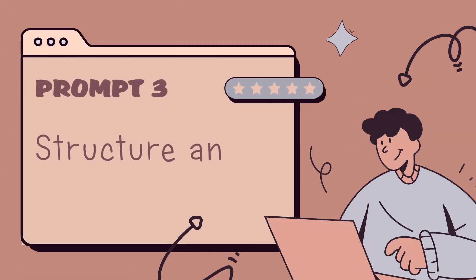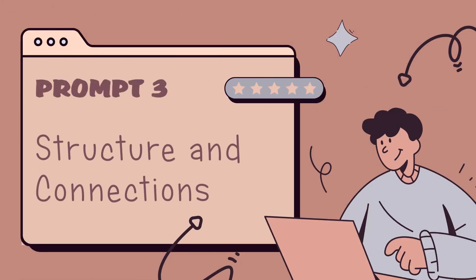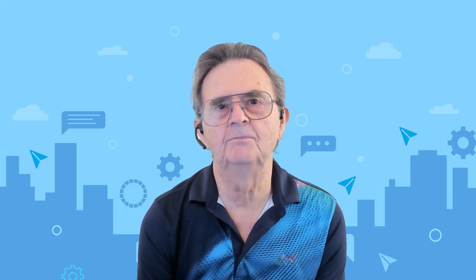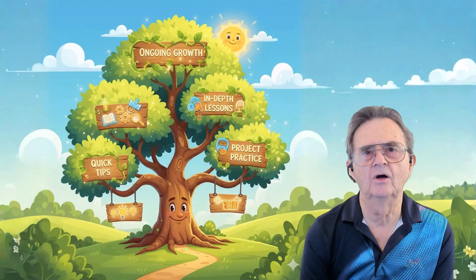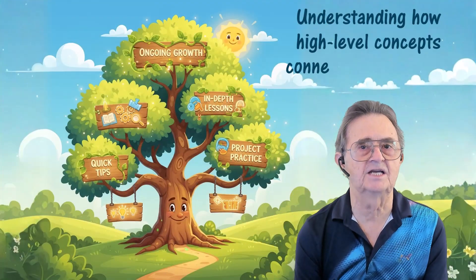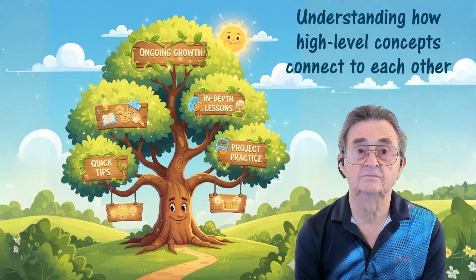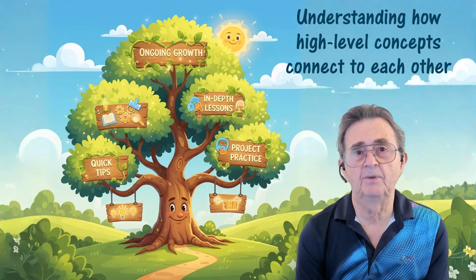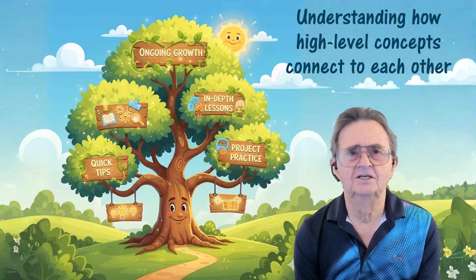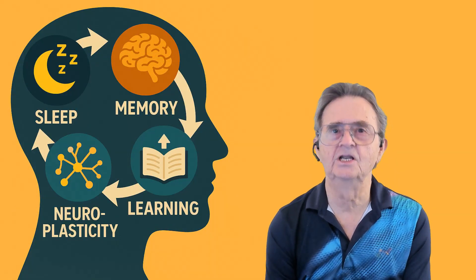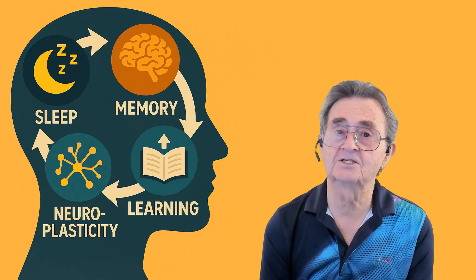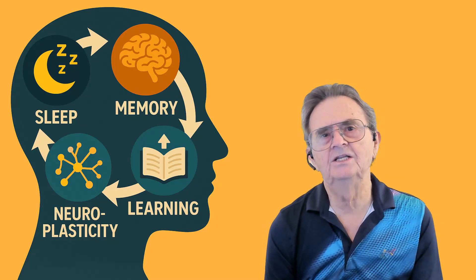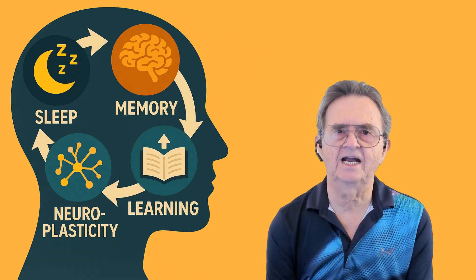Prompt number 3: Structure and Connections. This prompt helps you see the big picture when you're dealing with multiple related concepts. It's designed for a completely different learning goal — understanding how high-level concepts connect to each other. Like when you've got puzzle pieces scattered all over the table and suddenly you see: sleep affects memory, which affects learning, which circles back to neuroplasticity. It's about seeing the whole picture, not just individual facts.